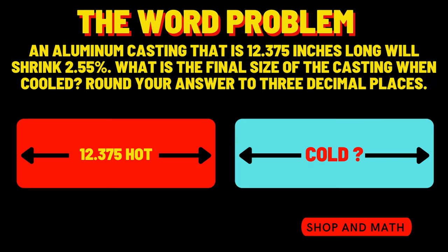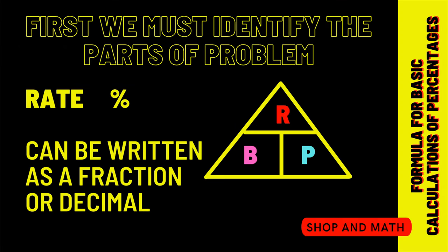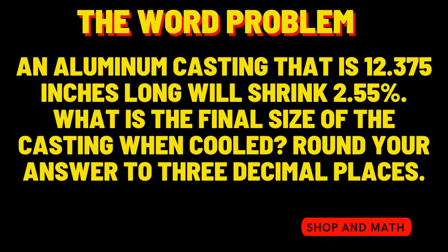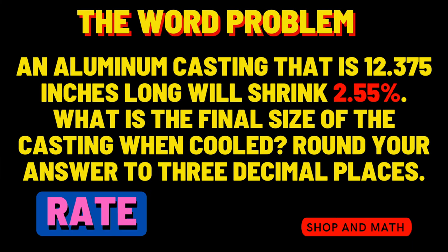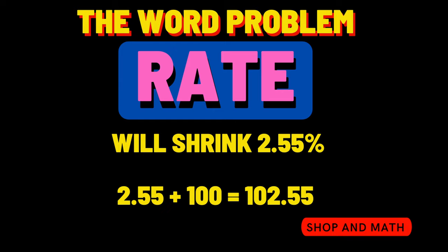Here's a little bit better of a visual. When it's hot, it's 12.375 inches long. When it cools down, what is the length of the part? Let's identify the base, the rate, and the percentage. Rate is associated with the percent sign, and we have a 2.55%, so that must be our rate — the rate of shrink. Therefore, you have to add 100 to that as well, so the rate is going to be 102.55.